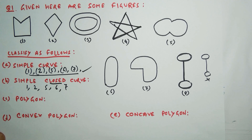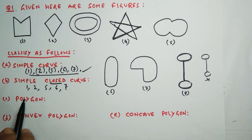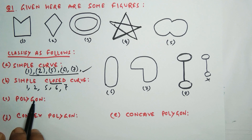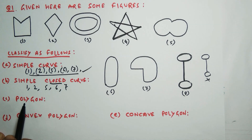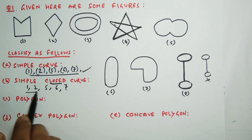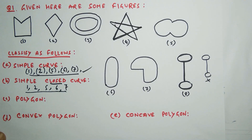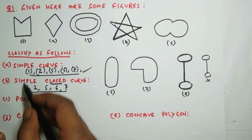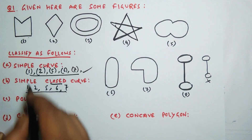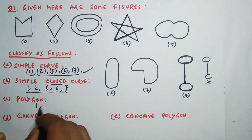Now for part C, which are polygons? Polygons are simple closed curves entirely made of line segments. So from our simple closed curves, we check which are entirely made of line segments. Number one is entirely made of line segments, so it is a polygon.